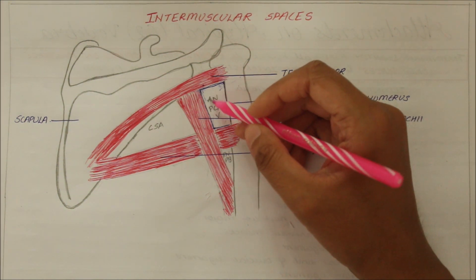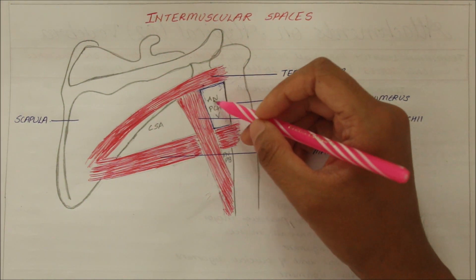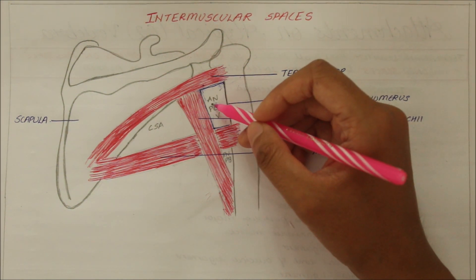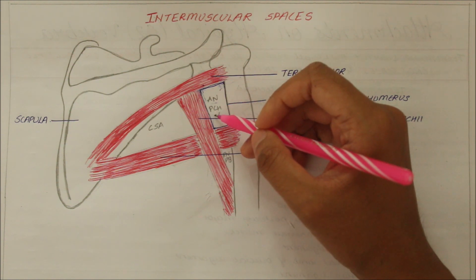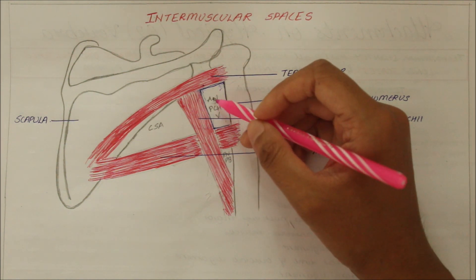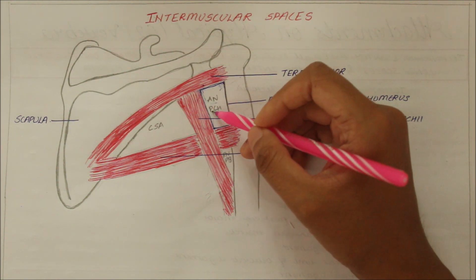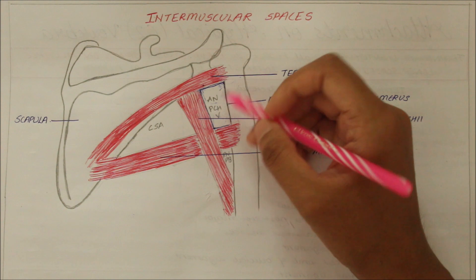The contents passing through the quadrangular space are the axillary nerve and the posterior circumflex humeral vessels (AN and PCHV).